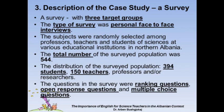The distribution of the surveyed population was as follows: 394 students and 150 teachers, professors, and/or researchers. All of the surveyed subjects are from the northern part of Albania, except the researchers who are from different cities and institutions. The questions in the survey were ranking questions, open response questions, and multiple choice questions. All information was collected and processed through appropriate software, such as SPSS or NVIVO, to deduce accurate results from the fieldwork.